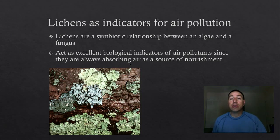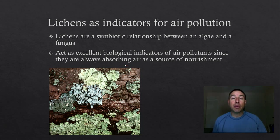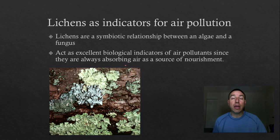One of the ways scientists look for air pollution is by looking at certain organisms — indicator species. One of the best indicator species for air pollution is lichens. Remember, lichens are a symbiotic relationship between an algae and a fungus, and they get most of their nutrients from the atmosphere. When the atmosphere becomes overly polluted, the lichens start to die and suffer. So we can use lichens as indicator species for air pollution. If your area has a good population of lichens, chances are your air quality is pretty good. However, if the lichens are disappearing, you might have a problem with air quality.